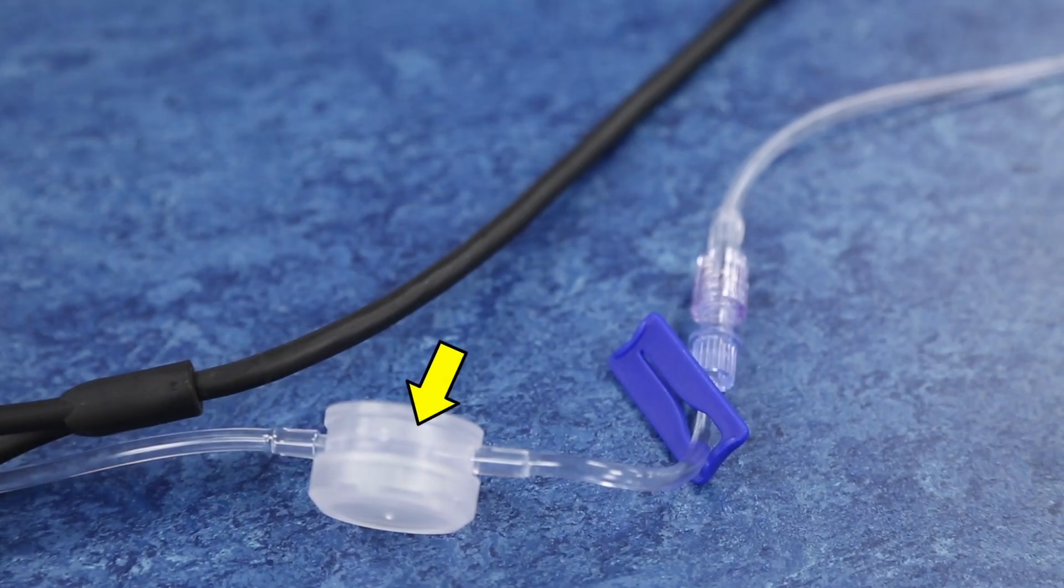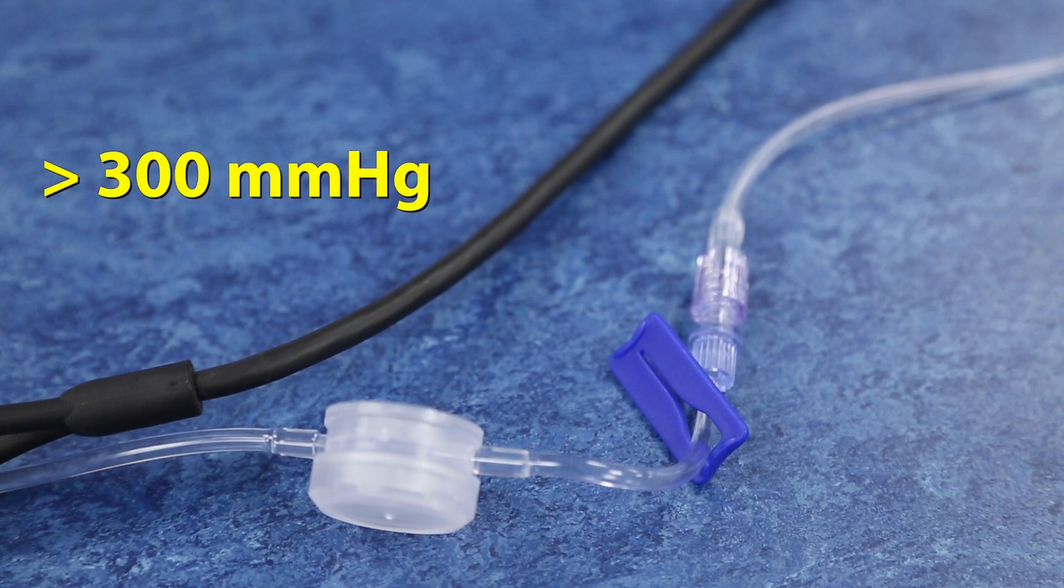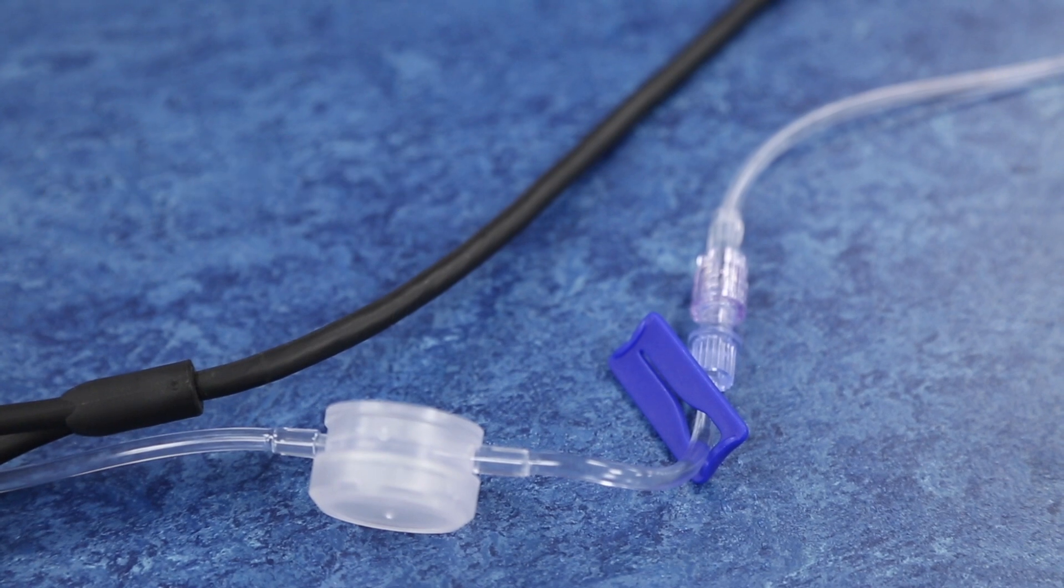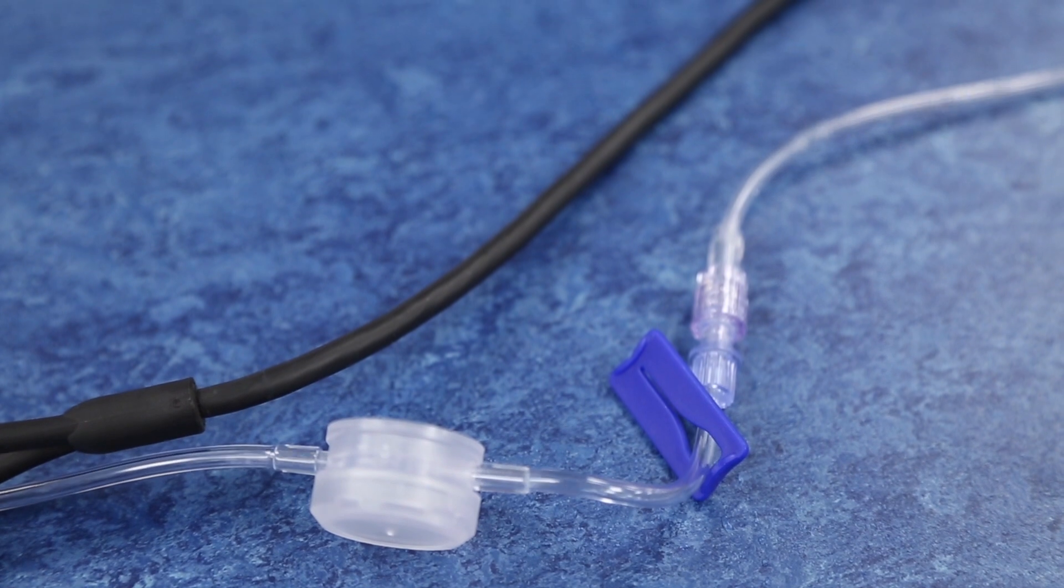A pressure regulating valve prevents abnormally high pressure greater than 300 millimeters of mercury from reaching the set or the patient. If pressure exceeds 300 millimeters of mercury, the flow of fluid will stop. Flow will continue when pressure is reduced to a safe level.